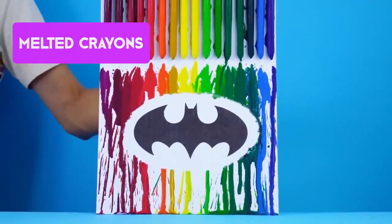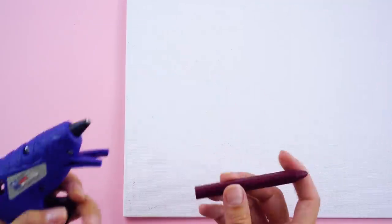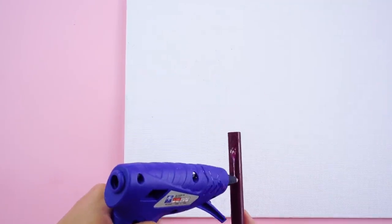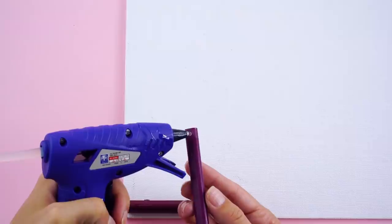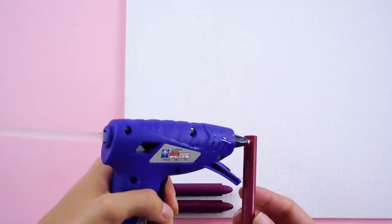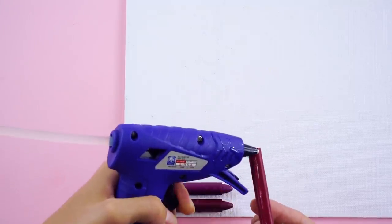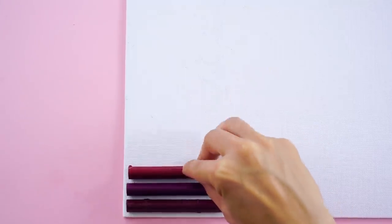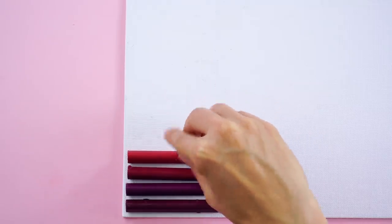Melted Crayons. Want to make some awesome art with melted crayons? Here's how to do it! First, hot glue your paperless crayons in a row at the edge of your canvas. Choose any colors you like. We've decided to go for a rainbow look. Glue the crayons all the way across the canvas.